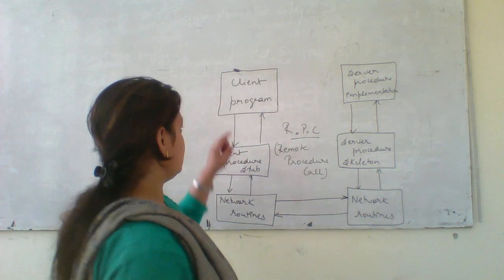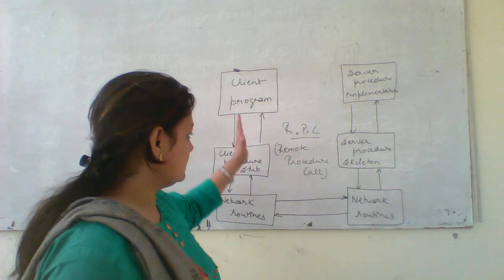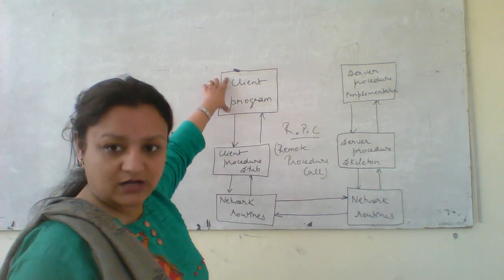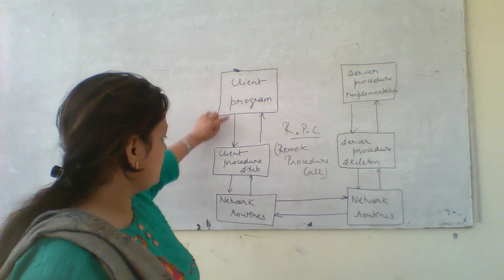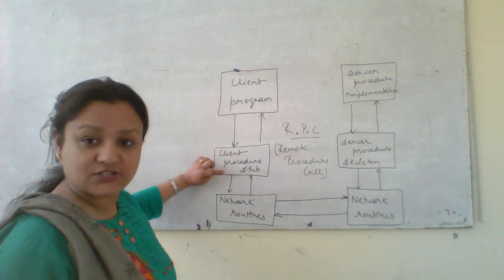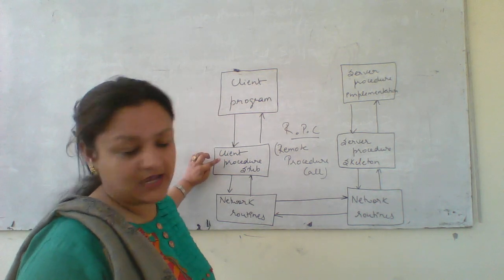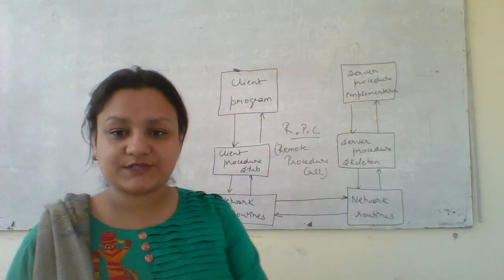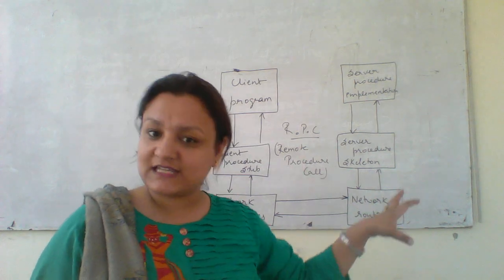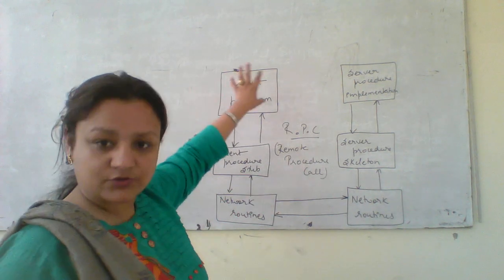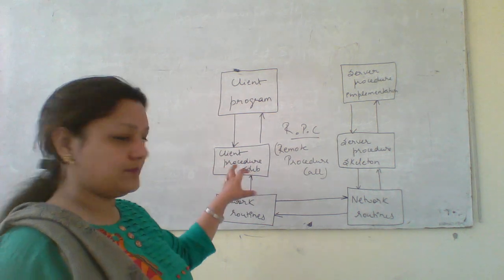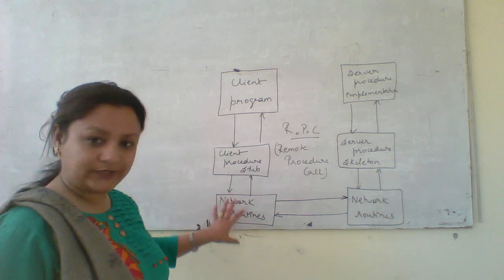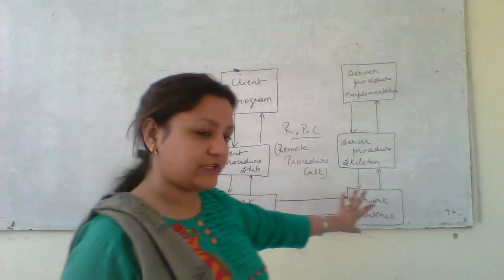This is the client side and this is the server side. The client program is running here, then it goes to the client procedure stub. On the client side there is always a stub, and on the server side there is always a skeleton. The client program goes to the client stub where processing is done, then it reaches the network routines on the client side.